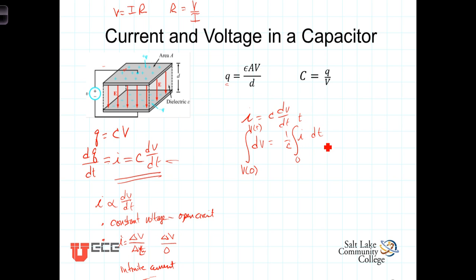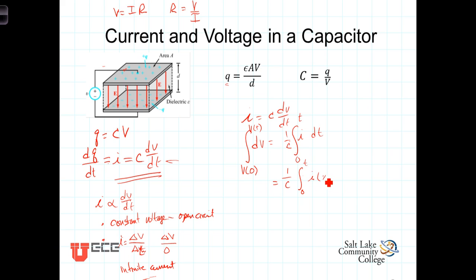Now because the differential variable is t and the upper limit of integration is also t, we'll rewrite the right-hand side using a dummy variable of integration so we don't get confused. That gives us 1 over C times the integral from 0 to t of i — being explicit that i is a function, in this case a function of our dummy variable of integration — times dx.